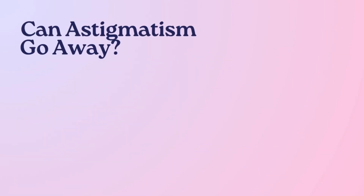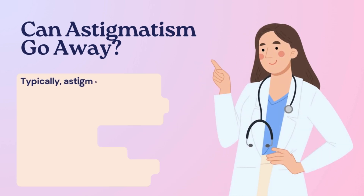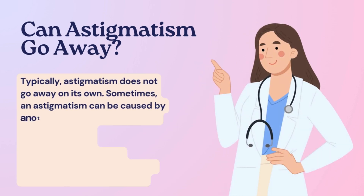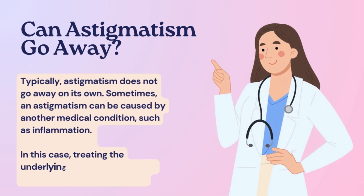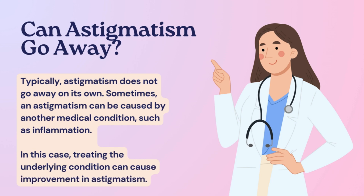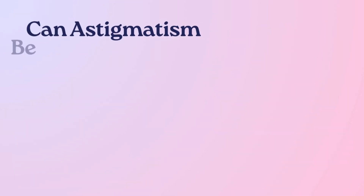Can astigmatism go away? Typically astigmatism does not go away on its own. Sometimes astigmatism can be caused by another medical condition such as inflammation — in this case, treating the underlying condition can cause improvement in astigmatism.